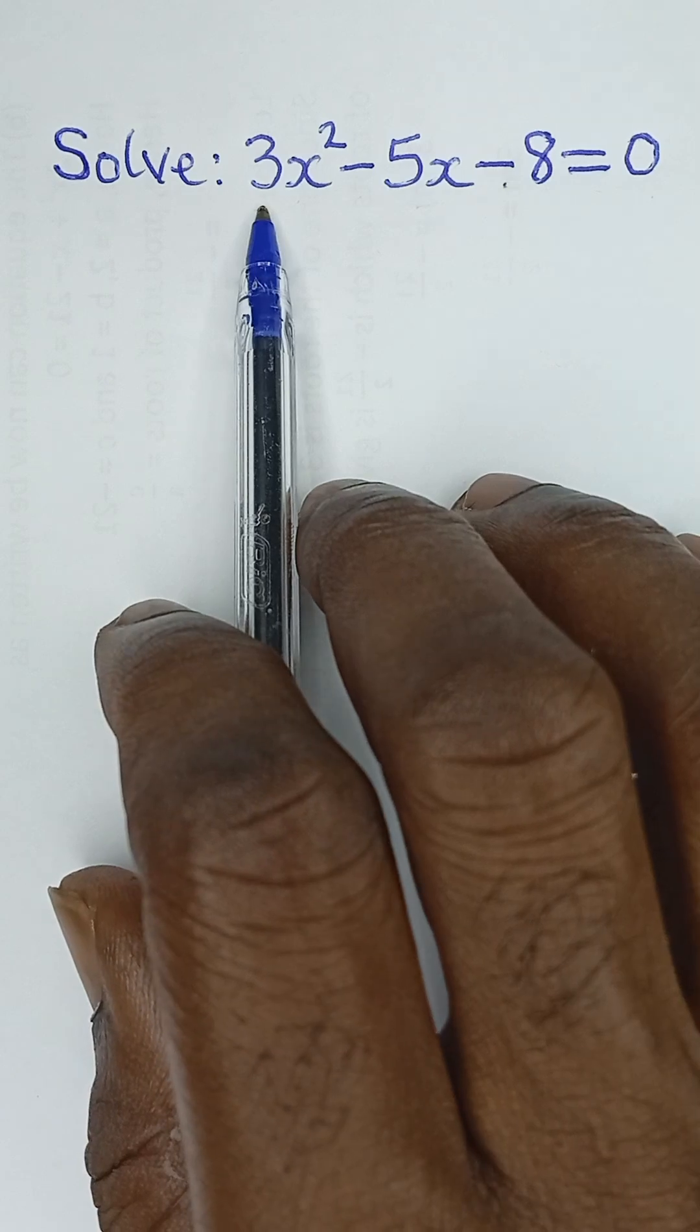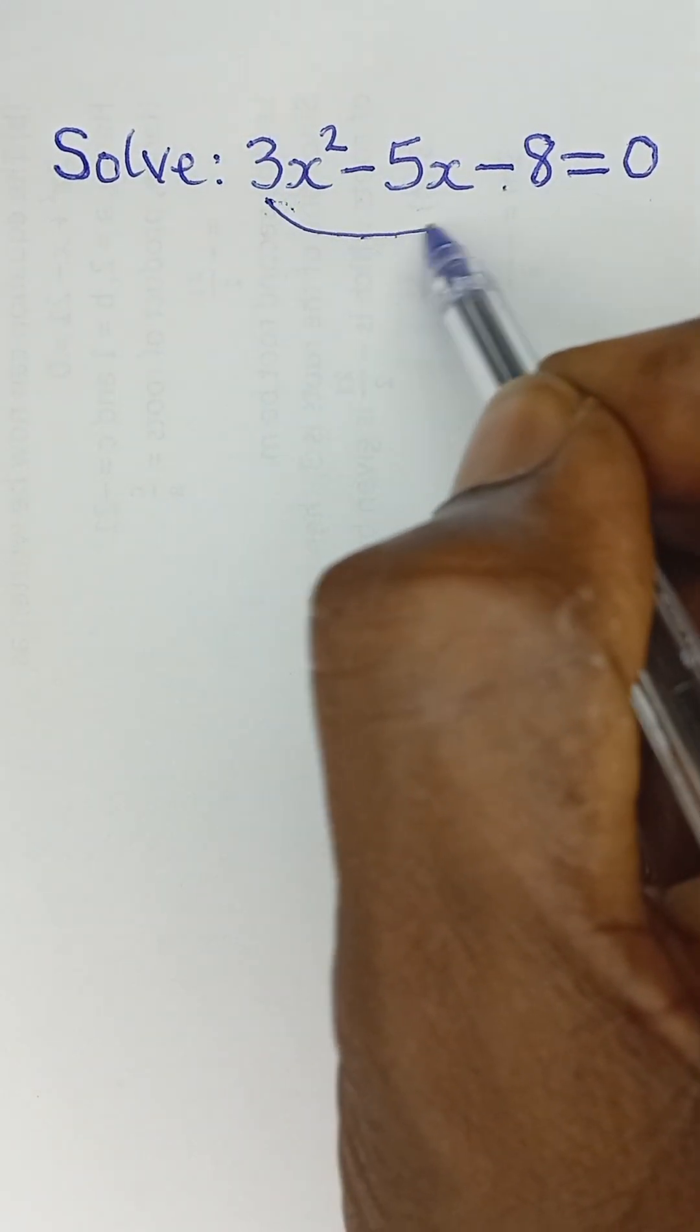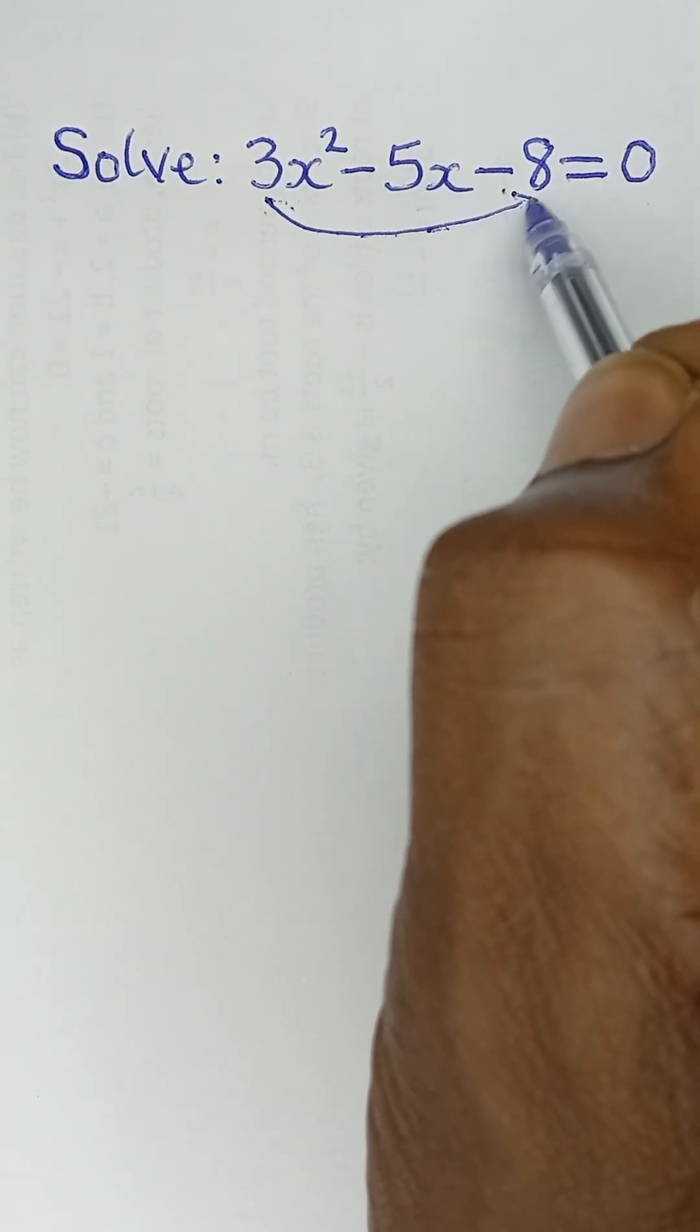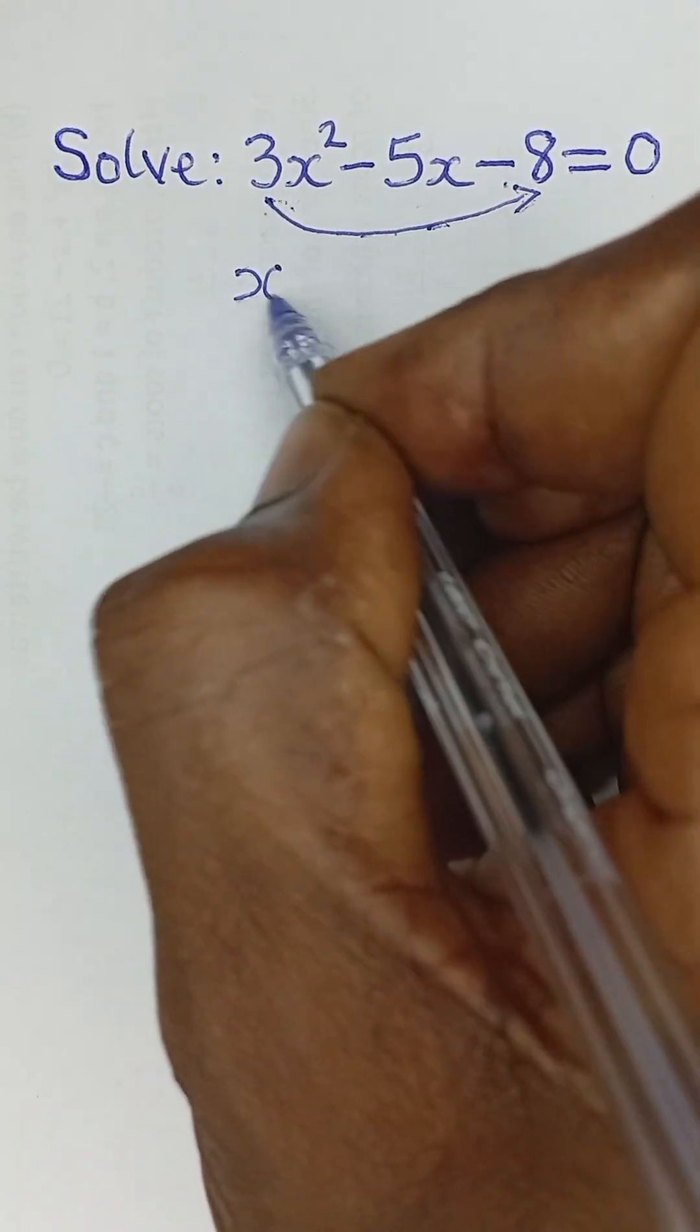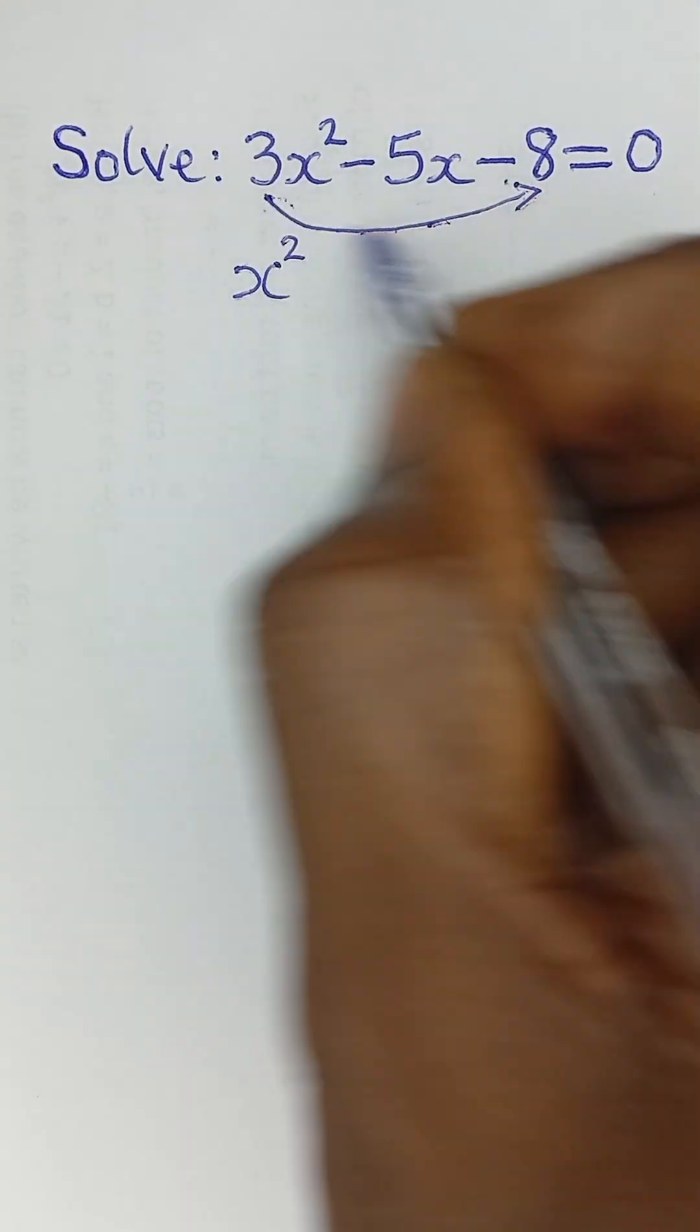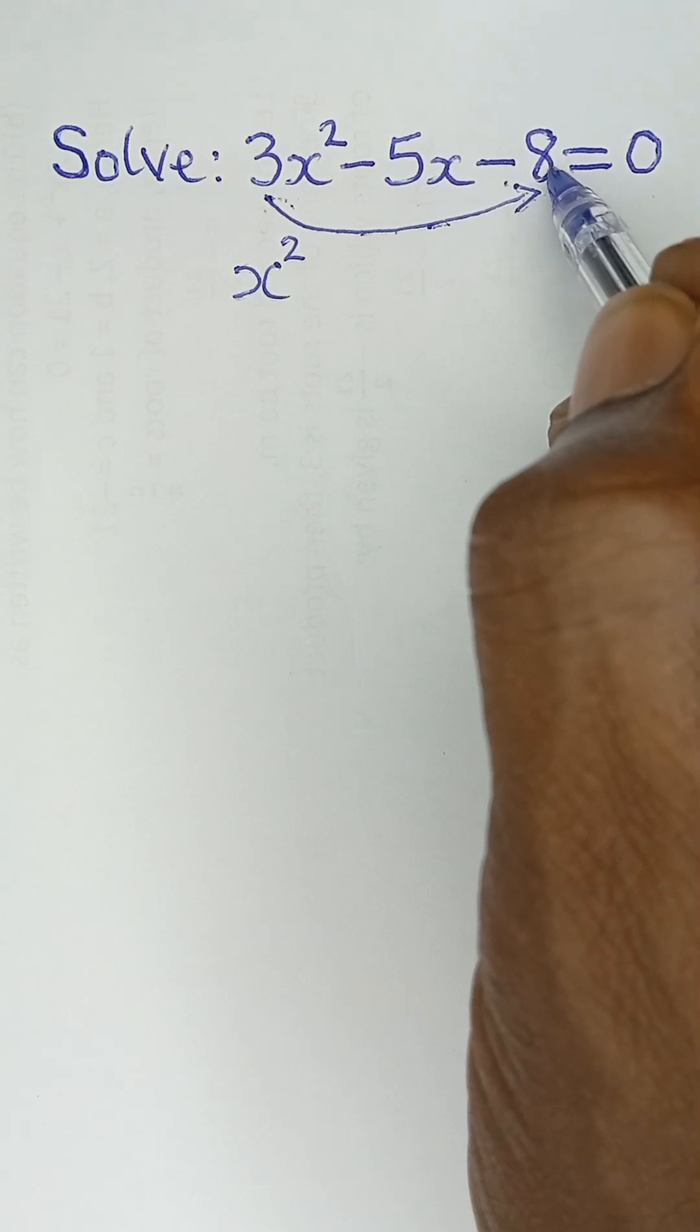The first thing for us to do is to take this number and use it to multiply 8. So that this place remains x squared. It becomes x squared because we are taking this 3 away from here to multiply 8.